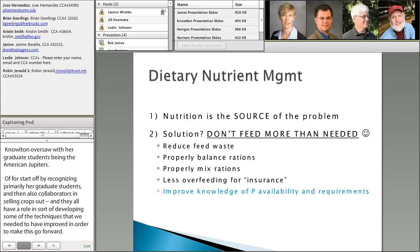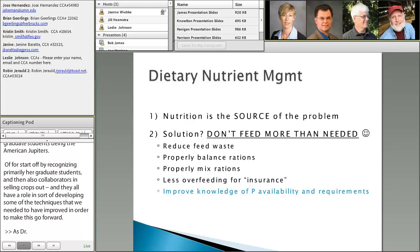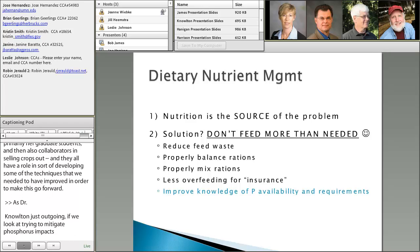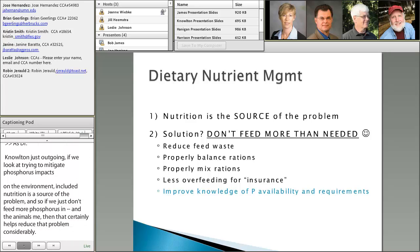If we look at trying to mitigate phosphorus impacts on the environment, clearly nutrition is a source of the problem. If we don't feed more phosphorus than the animals need, that helps reduce the problem considerably. But one challenge identified early was that people get nervous about feeding nutrients, phosphorus in particular, right at requirements because you don't always have perfect knowledge of the feed. There was also concern over the availability of phosphorus, particularly in byproducts.